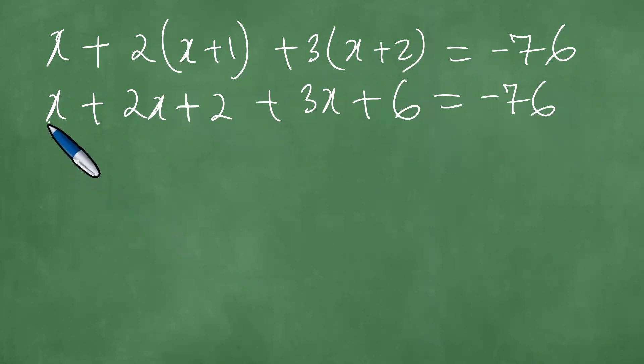Upon further addition, we have x plus 2x plus 3x, and these give us exactly 6x. And 2 plus 6 gives us 8, so we have 6x plus 8 equals minus 76.